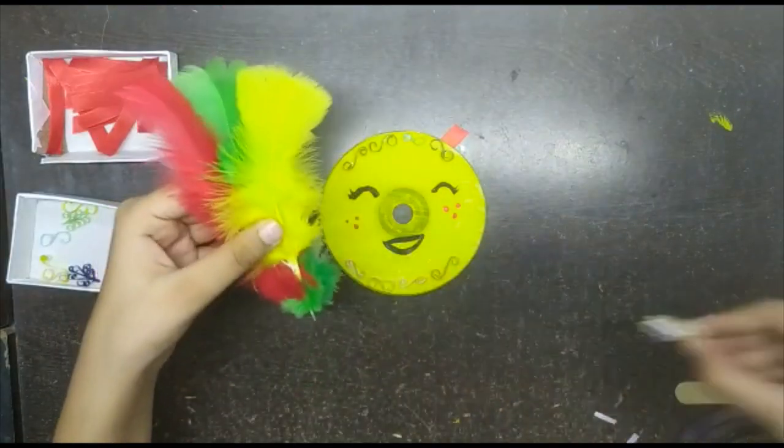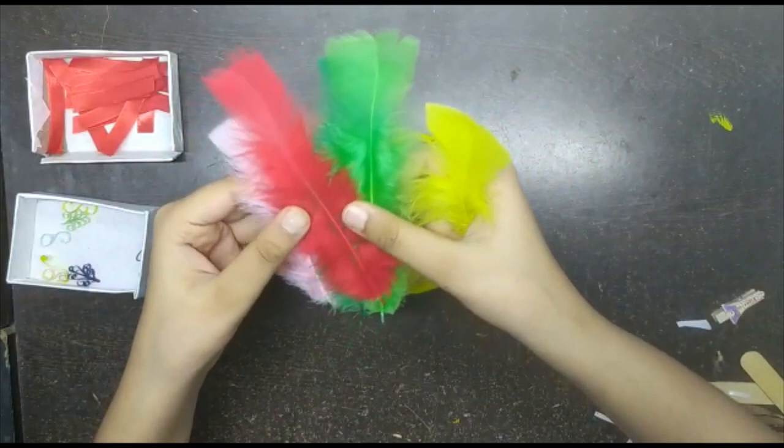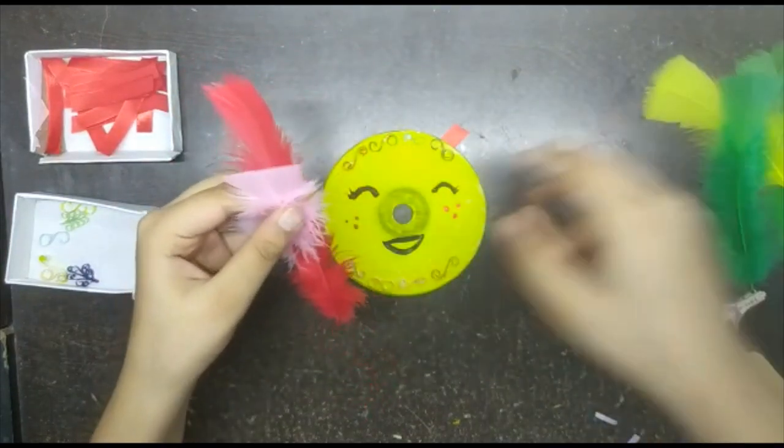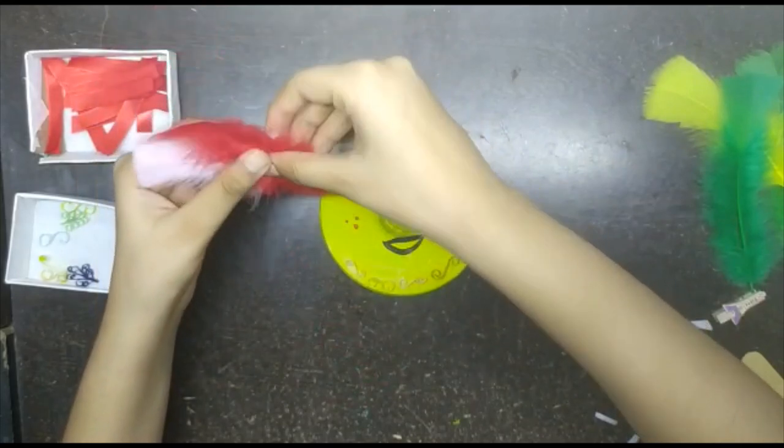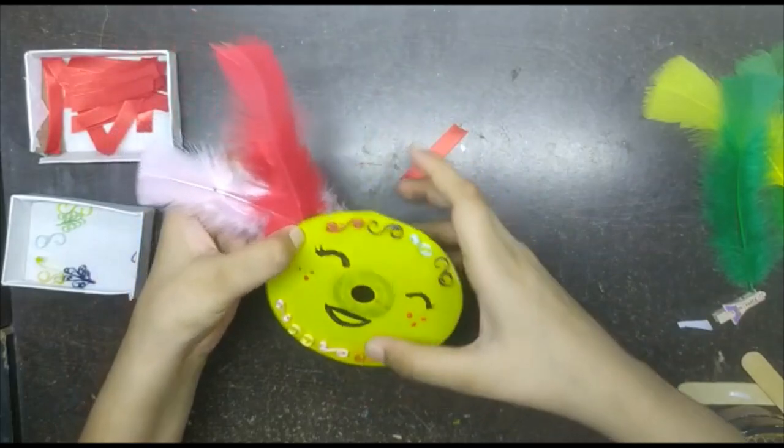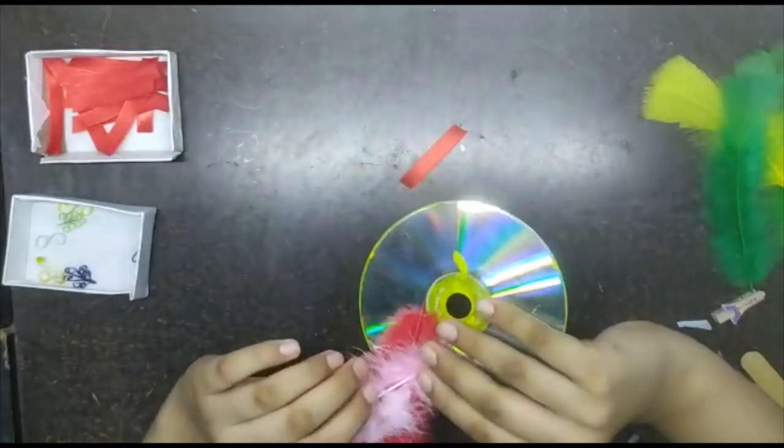Now I will take these feathers. I will take two feathers of my favorite color. Let's say it's pink and it's red. And I will place them together. I will take a glue drop or some fevicol or tape and then paste them at the back of the CD.